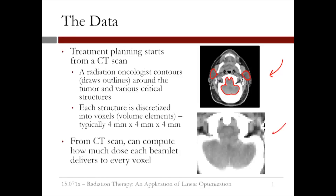The second image here shows a closer view of the brain. You can see the small squares or voxels — here they're two-dimensional, but in reality they would be three-dimensional. Now, we can compute how much dose each beamlet, or piece of the beam, delivers to each voxel.